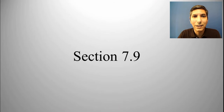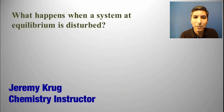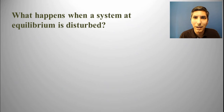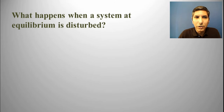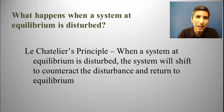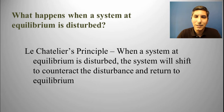Hi there, I'm Jeremy Krug, and in this video we're taking a look at AP Chemistry Unit 7, Section 9, which is all about what happens when you have a system at equilibrium and then you disturb that equilibrium. When we talk about disturbing a system at equilibrium, this is Le Chatelier's principle that helps us to understand this. It basically says that anytime you have a system at equilibrium and that system is disturbed, the system is going to shift itself in order to counteract that disturbance, and it's going to return to equilibrium.